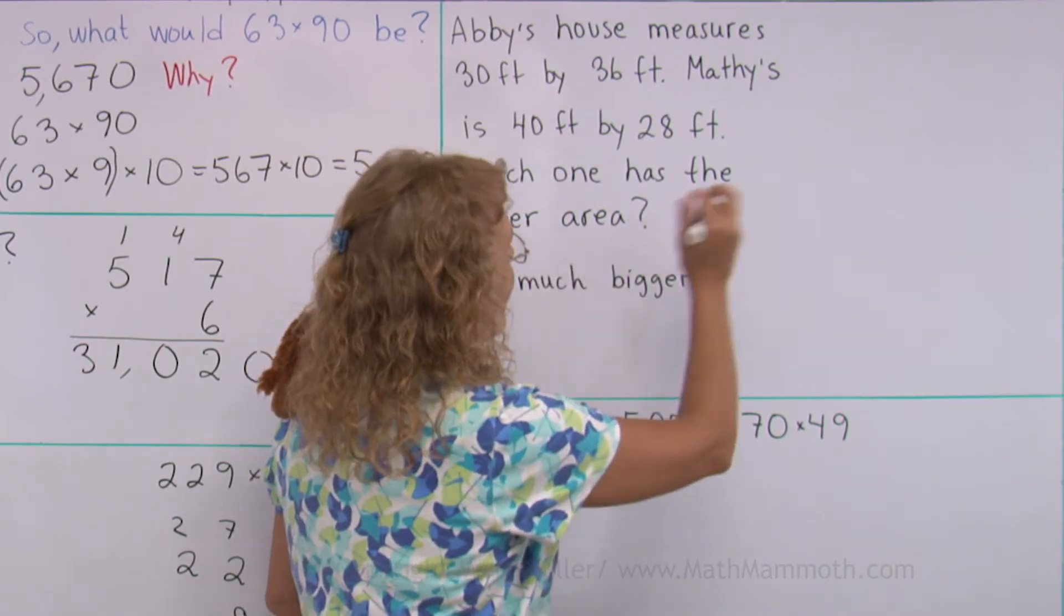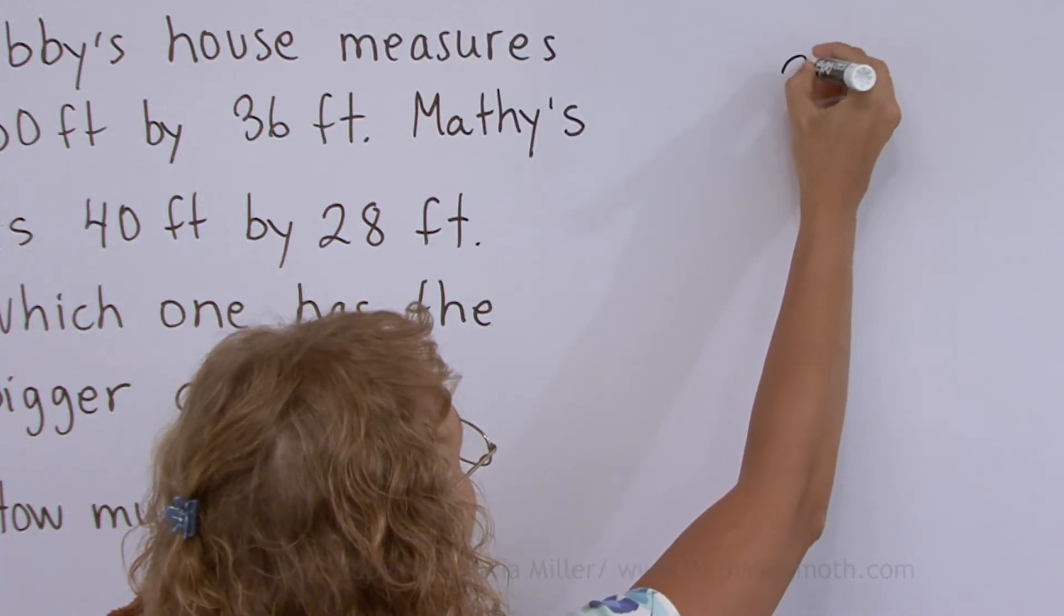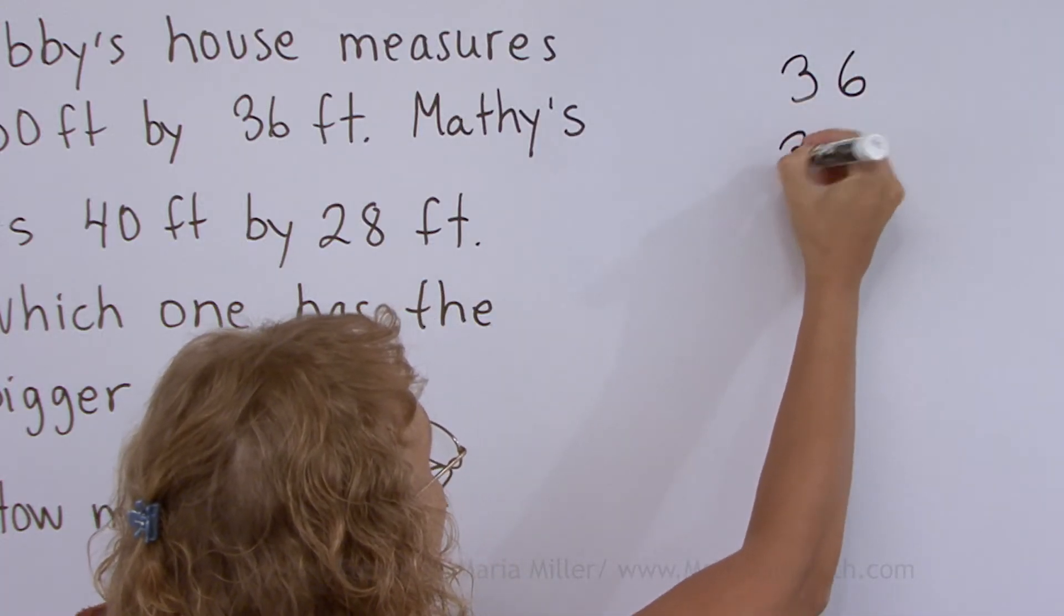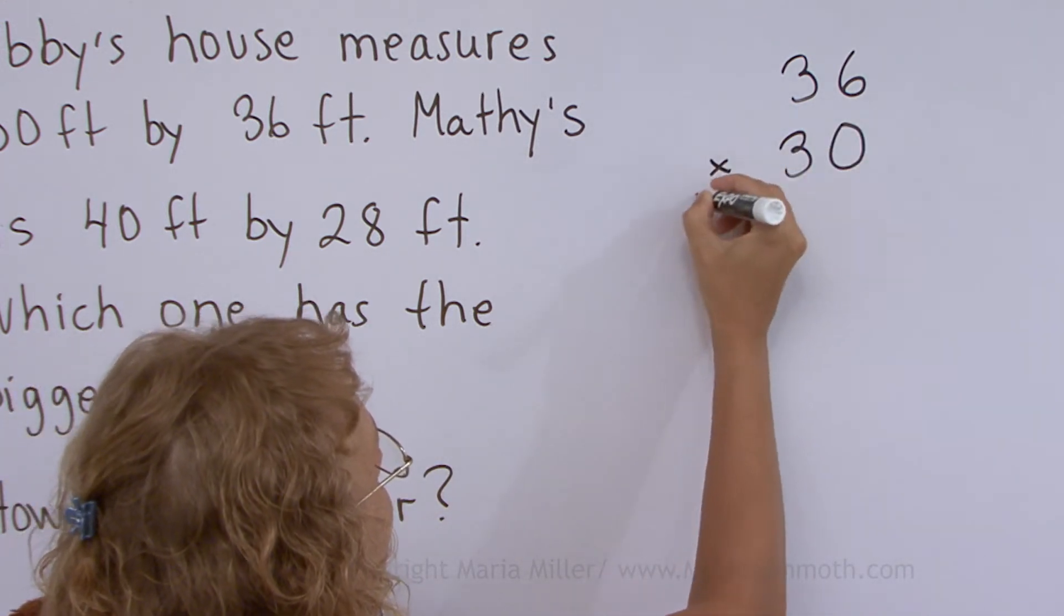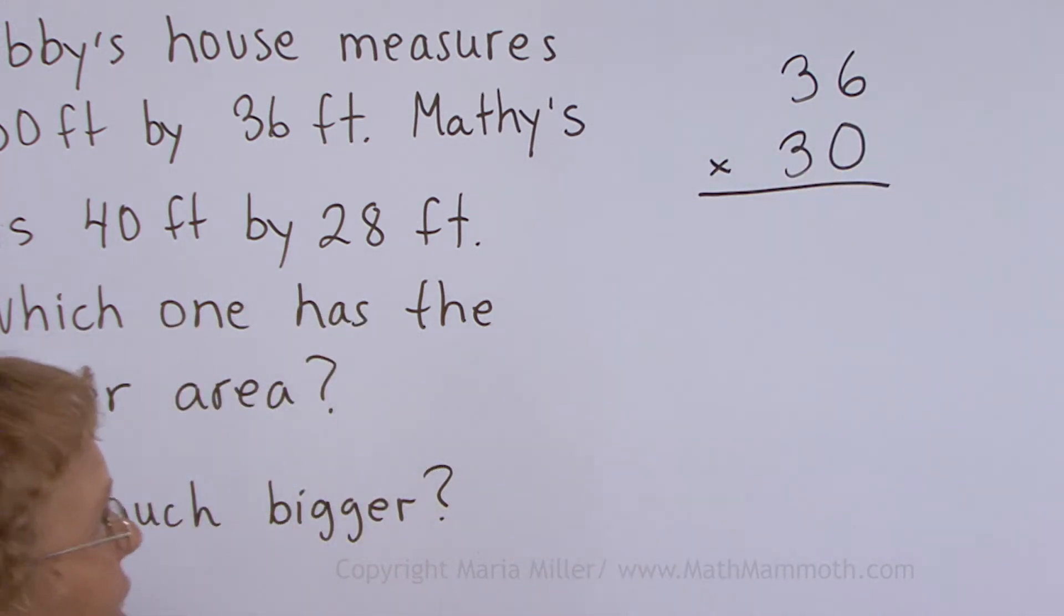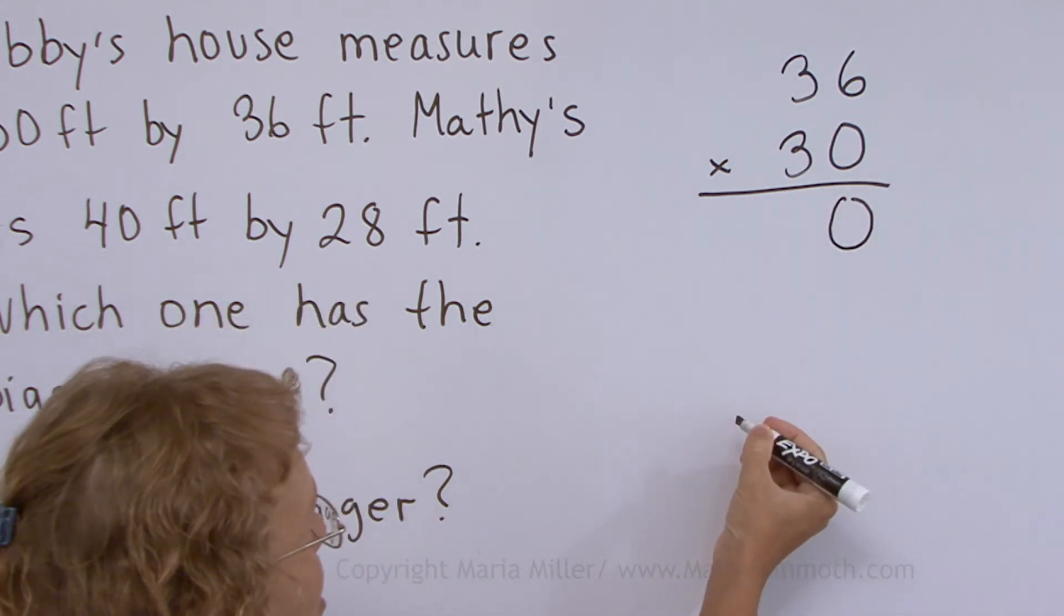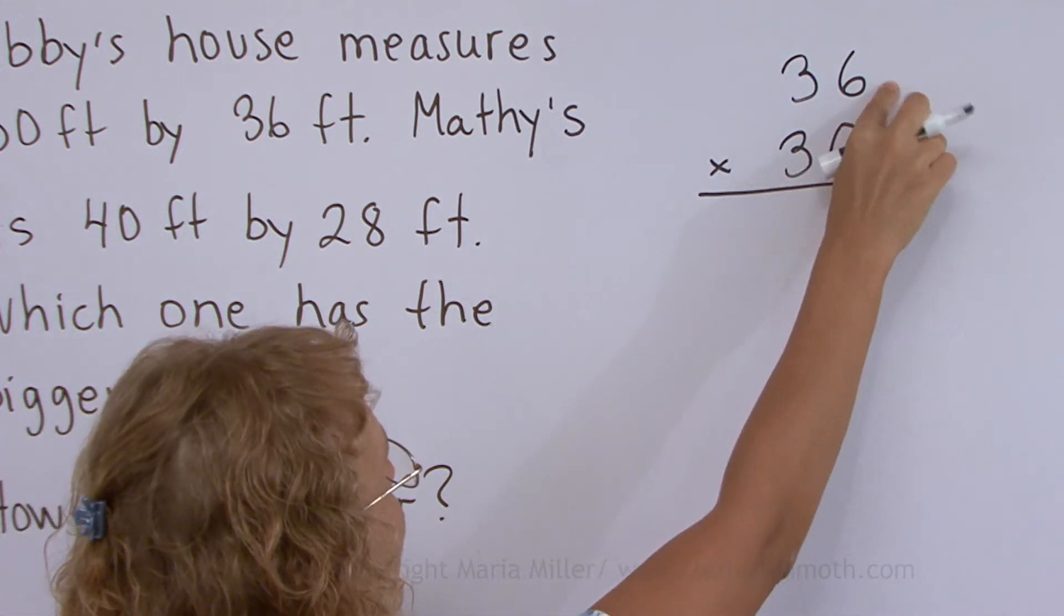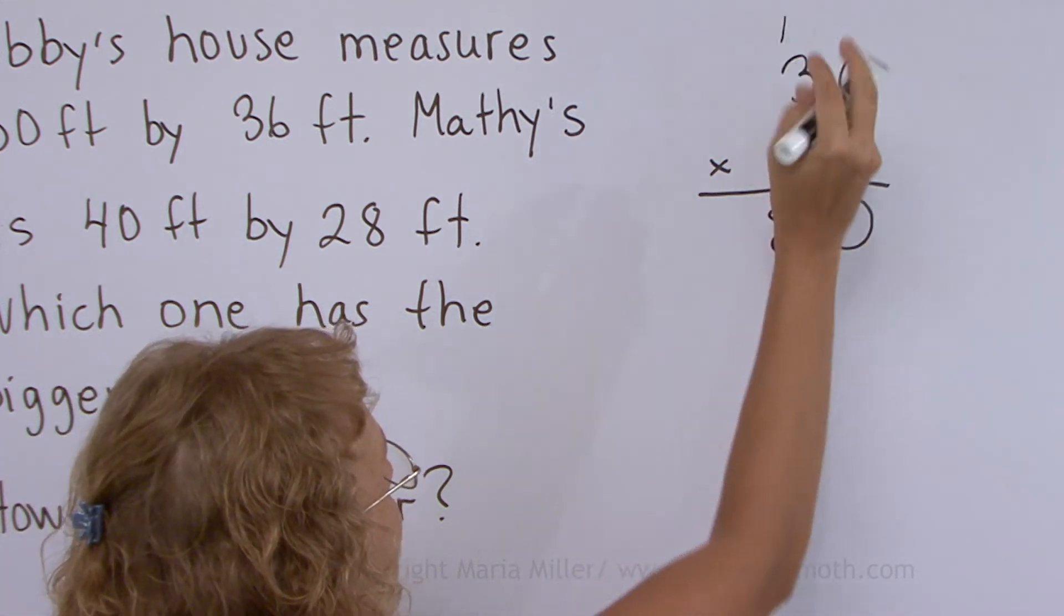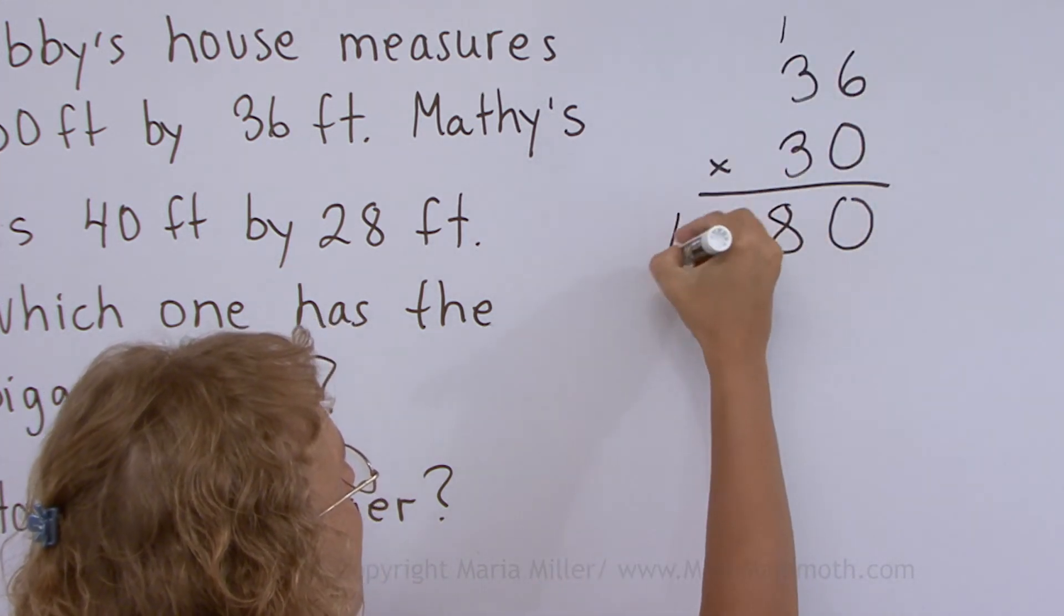30 times 36. Notice I write 36 times 30, 30 there under the 36. Because then I use my trick. I can put 0 here to start with and then just multiply 3 times 36. 3 times 6, 18 and then 3 times 3 plus 1 is 10.